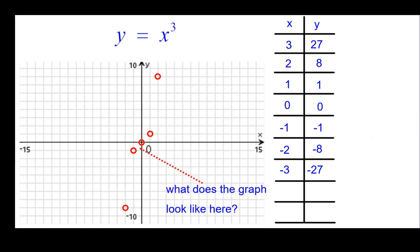But what does the graph look like here? Is it like a straight line? Well, to figure that out, we'll go ahead and try two other values. 1 half and negative 1 half.